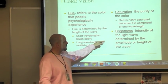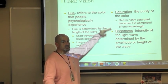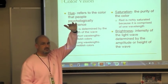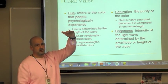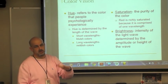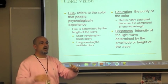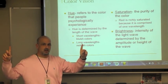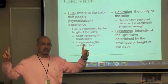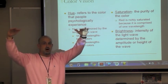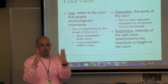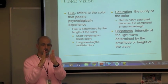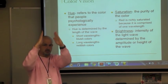Brightness refers to the intensity of the light wave — the height or amplitude. The taller the wave, the brighter it will be; the shorter the wave, the duller the color. A bright red color has long wavelengths and very tall waves. A bright blue color has waves close together but very tall.